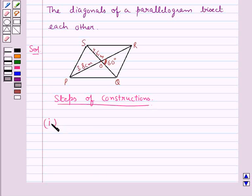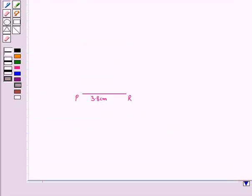Now in the first step, we draw diagonal PR equal to 3.8 cm. So this is the diagonal PR of the parallelogram PQRS of measure 3.8 cm.